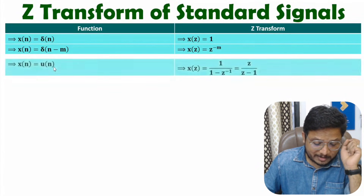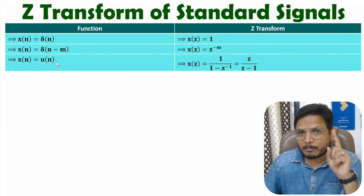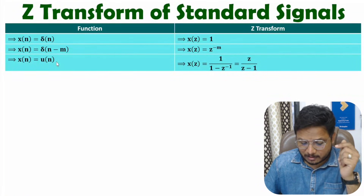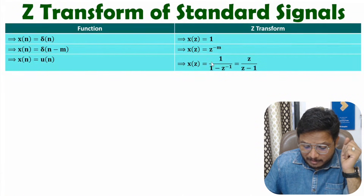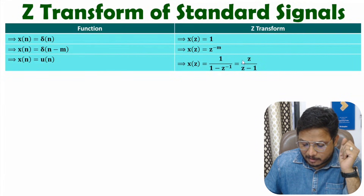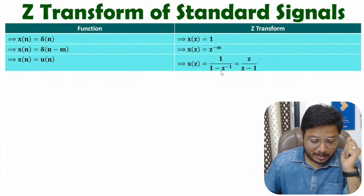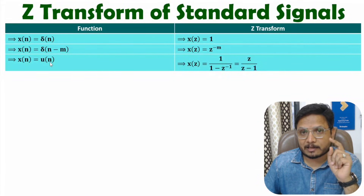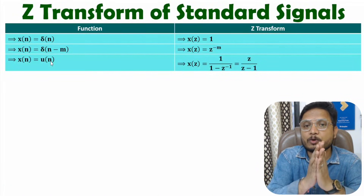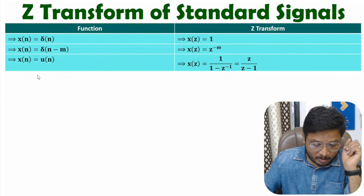Now I'll talk about the step signal. Here we have unit step signal U(n). You need to remember that the Z-transform of U(n) is 1 divided by (1 minus Z⁻¹). You can also write this as Z divided by (Z minus 1) by substituting Z⁻¹ equals 1/Z. This is a right-sided unit step signal, where U(n) has a range from 0 to positive infinity.